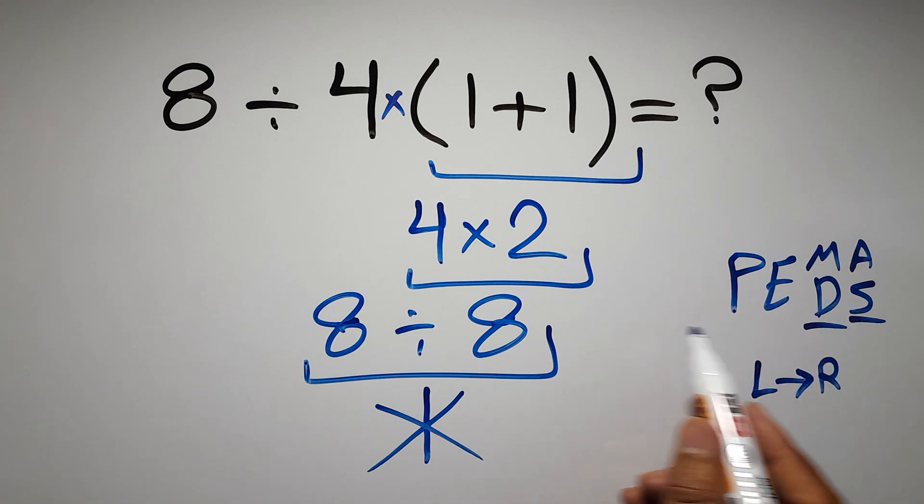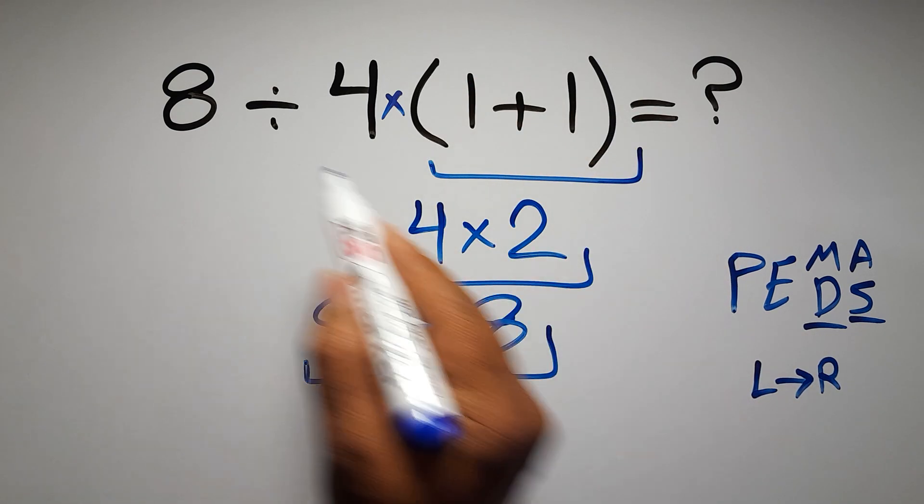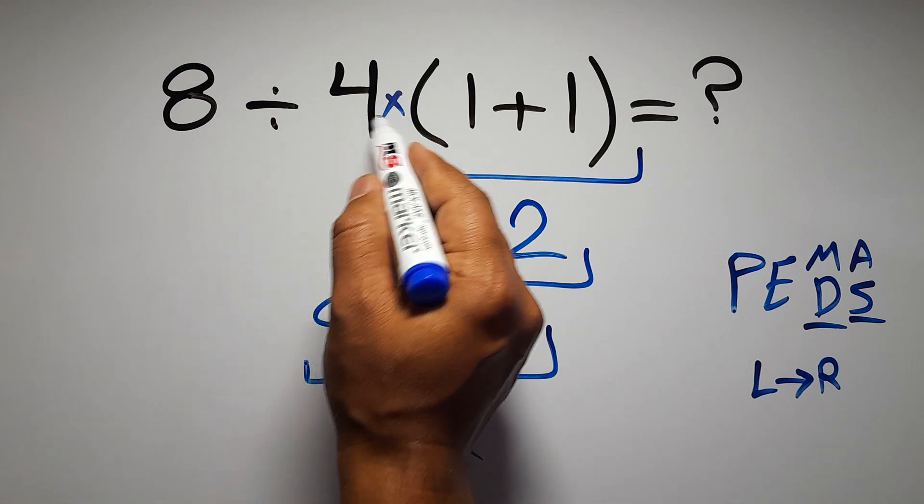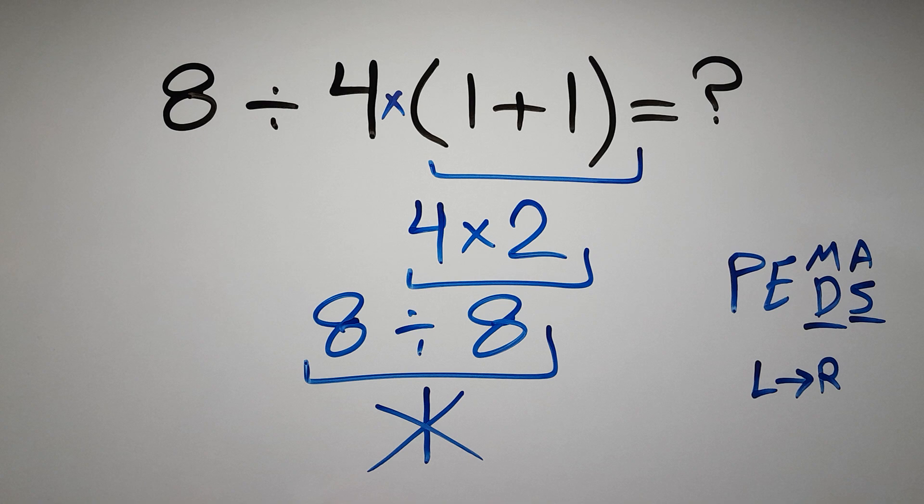So according to the PEMDAS, first we have to do this parenthesis, then this division, and finally this multiplication. If we do this multiplication before this division, it is wrong.